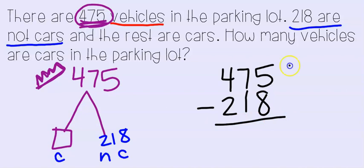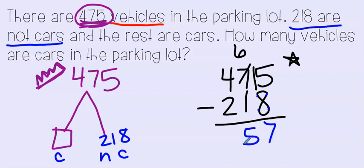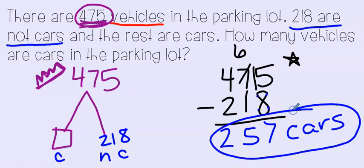We start in the ones place. 5 minus 8 — I can't do that, so let's go next door and ungroup one of my tens. Now I have 15 ones. 15 minus 8 is 7. Now let's go to the tens. I gave one away, so 6 minus 1 is 5. And 4 minus 2 is 2. So we have 257 cars — that's our final answer for this problem.